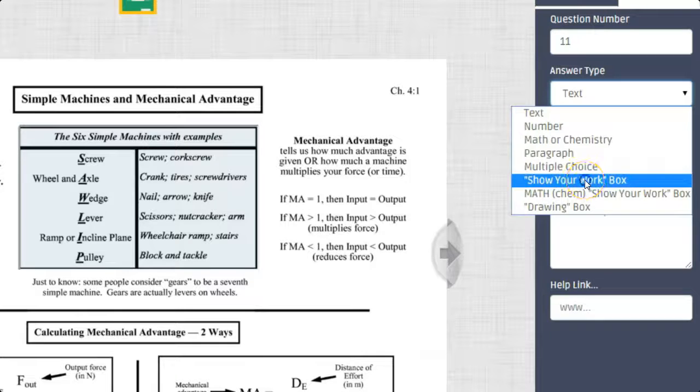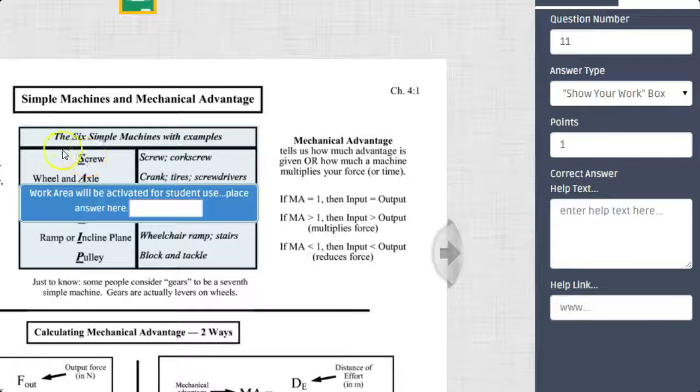First of all, a show your work box. A show your work box will allow students to write on the paper, but then it allows the teacher to put in a correct answer, which the students will actually grade it. So they can write on it, show the work, but then you can grade it.